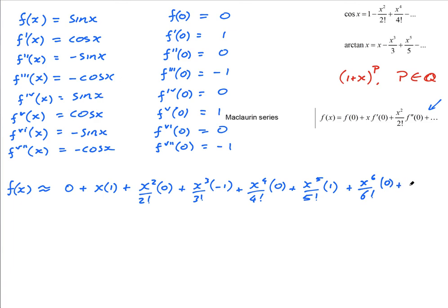Plus x to the six over six factorial times zero, plus x to the seven over seven factorial times minus one. Now this is equal to—zero plus x plus zero—x plus x to the five over five factorial plus zero minus x to the seven over seven factorial.